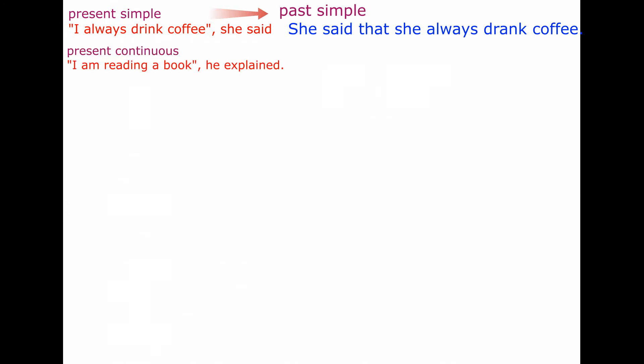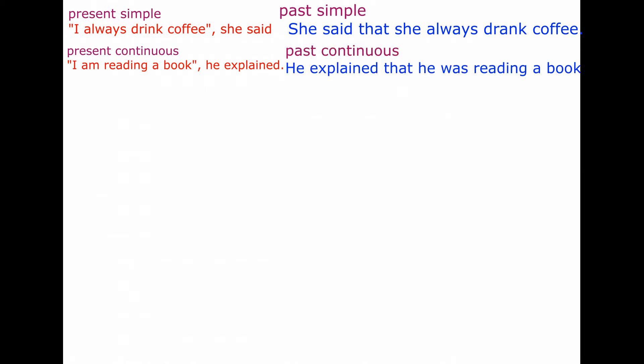Present continuous: 'I am reading a book,' he explained. He explained that he was reading a book.